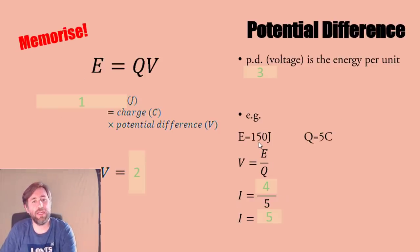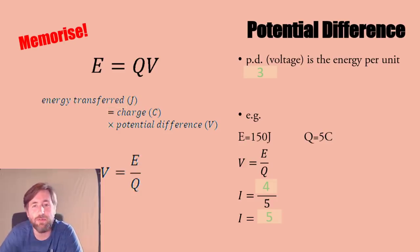Potential difference - energy is defined as charge times potential difference. It's better to define what a voltage is: the energy per unit charge. Energy per unit charge is what a volt is, what a potential difference is. You've got 150 joules for five coulombs of charge - 150 over five, energy over charge, 30 volts.